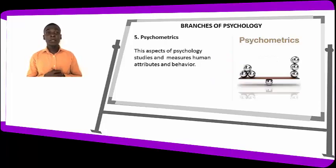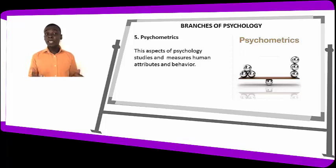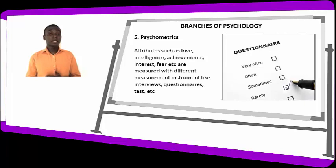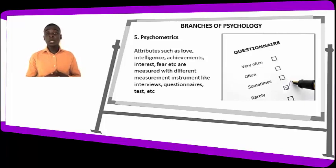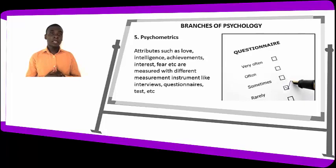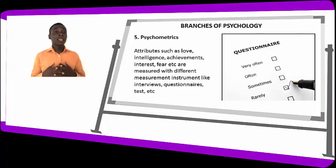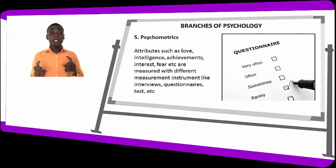Psychometrics is an aspect of psychology that studies and measures human attributes and behavior — attributes such as love, intelligence, achievement, interest, and fear. These are measured using different measurement instruments like interviews, questionnaires, and tests. So in psychometrics, we are measuring human attributes by the use of these measurement instruments.